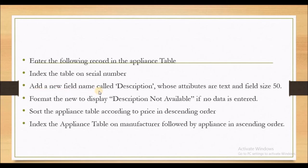The next instructions say: add a new field named 'Description' whose attributes are text with field size 50; format the new field to display 'Description not available' if no data is entered; sort the appliance table according to price in descending order; and index the appliance table on manufacturer followed by appliance in ascending order.